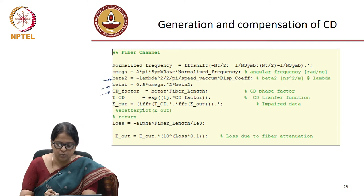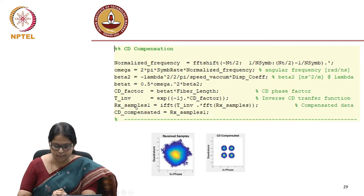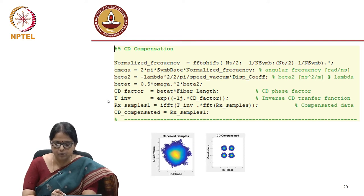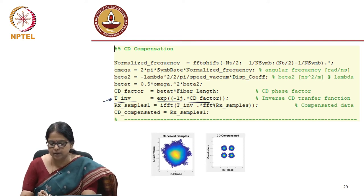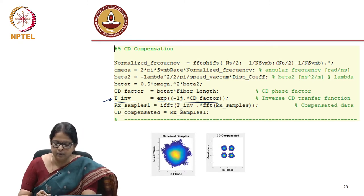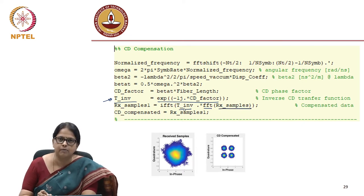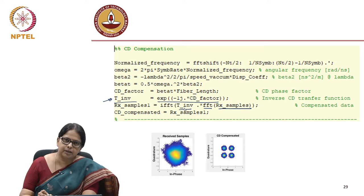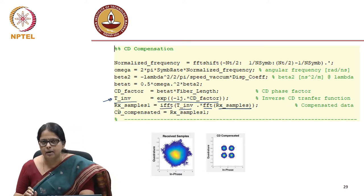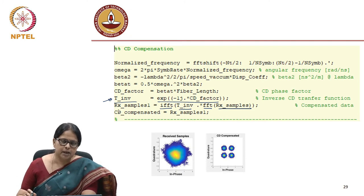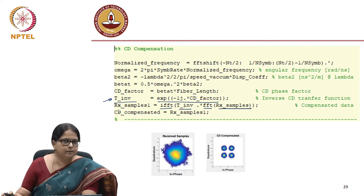You need to do an IFFT to get your signal back in the time domain. To compensate for chromatic dispersion, all you need to do is multiply it with the inverse: T_inverse = exp(-j * CD_factor), the same CD factor. After you multiply the FFT of the received symbols with the inverse of the transfer function corresponding to CD, you do an IFFT and get your received symbols. That is a very simple methodology.